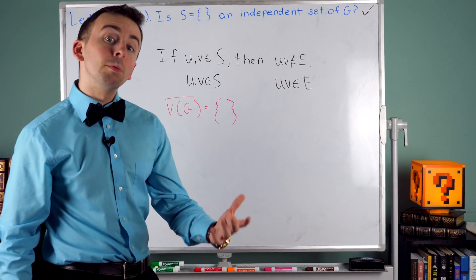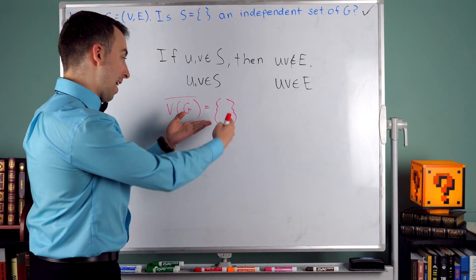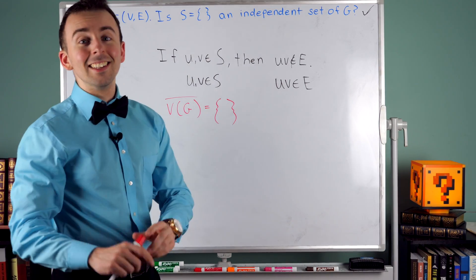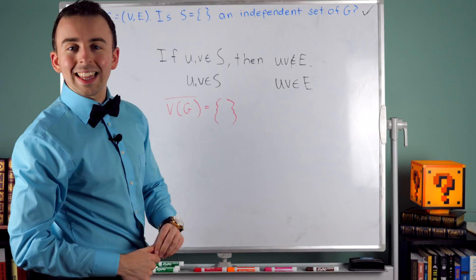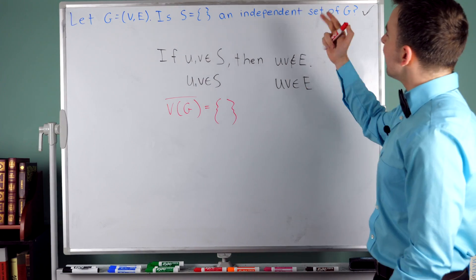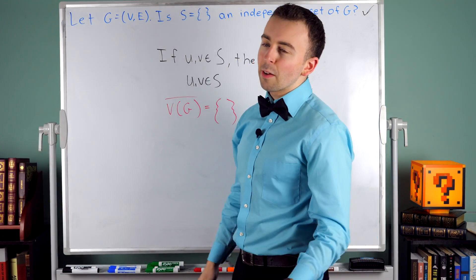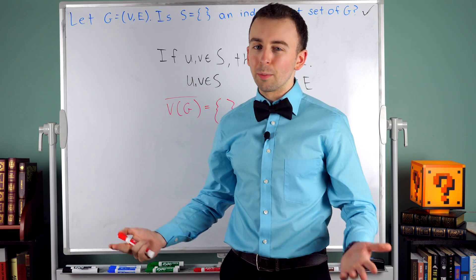And like I said, the complement of a vertex cover is always an independent set. So that means the empty set is an independent set. And we talked about the definition and why that's true. So that is the answer. Yes, indeed. The empty set is an independent set of every graph. Although for convenience, you may find that people exclude it from consideration.